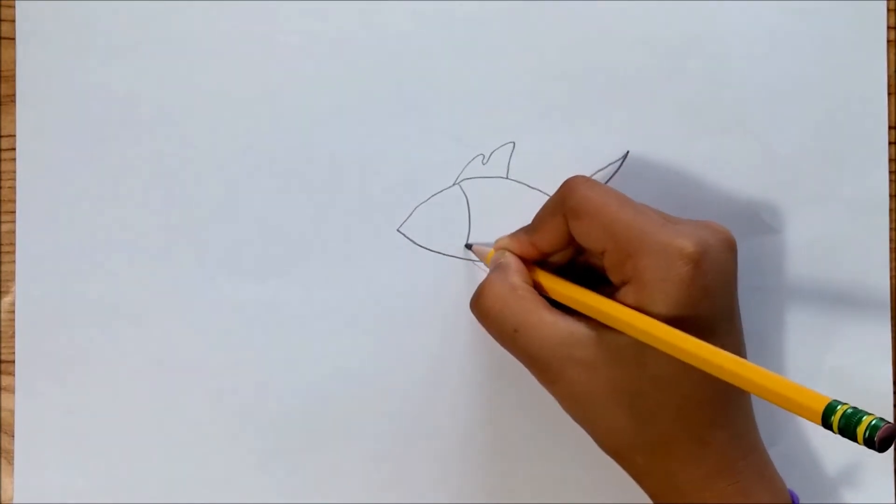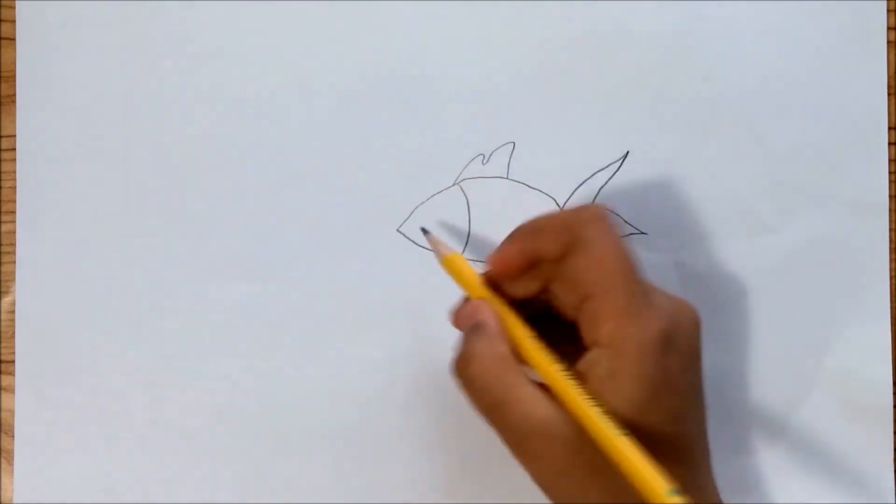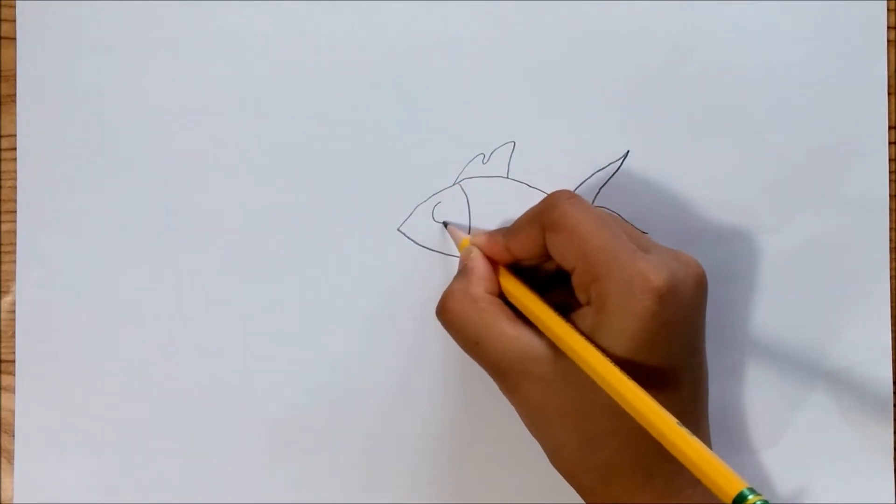Then draw a curve like a little bit away from the beginning. Then draw a circle for the eye.